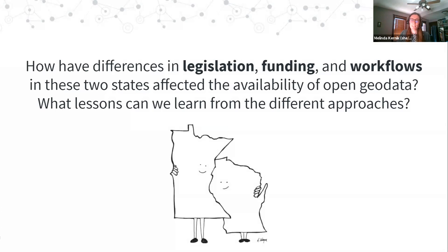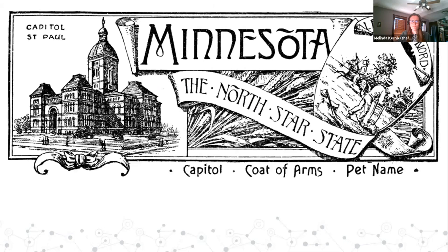Our central question is: how have differences in legislation, funding, and workflows between the two states affected the availability of open geodata, and what lessons can we learn from their different approaches? We'll start with a quick overview of our two case studies and then have a conversation about points of departure. Our first case study is the state of Minnesota.